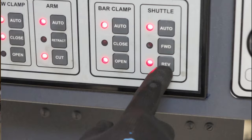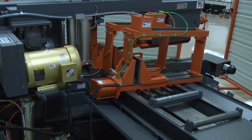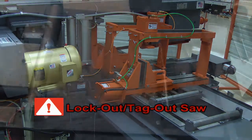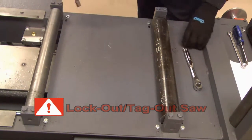Reverse the shuttle to the retracted position. Once the feed has stopped in the retract position, use normal lockout tagout procedures to secure the saw before attempting to perform any work on it.